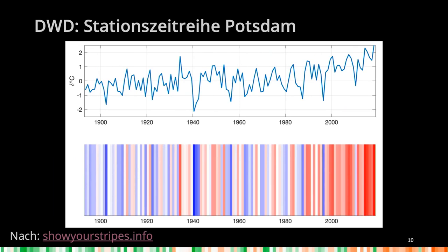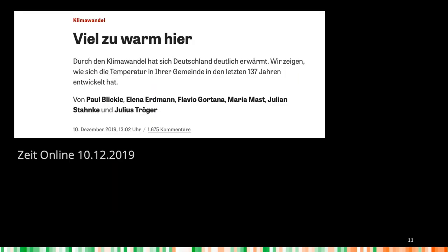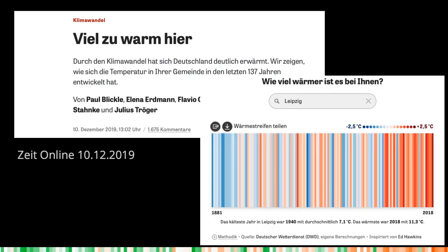There's obviously data available at the German Weather Service going back to the 1800s. Everyone could go there and take some coordinates and think, how does this look for my favorite place? Someone had this idea before — they created a tool where you can put in your favorite place, for example Leipzig, and then you get this stripe. It's inspired by Ed Hawkins. The source is the German Weather Service. When you click on Methodic, you see exactly what I told you just before.